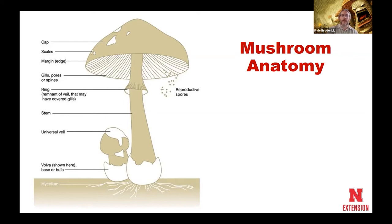Down at the bottom is where we have our universal veil — the volva. Sometimes we have remnants of it on the cap. But once we go underground, that's where most of that mushroom will actually be living, in that mycelial mat. Those long thread-like structures extend much further than we ever see with the actual mushrooms themselves.